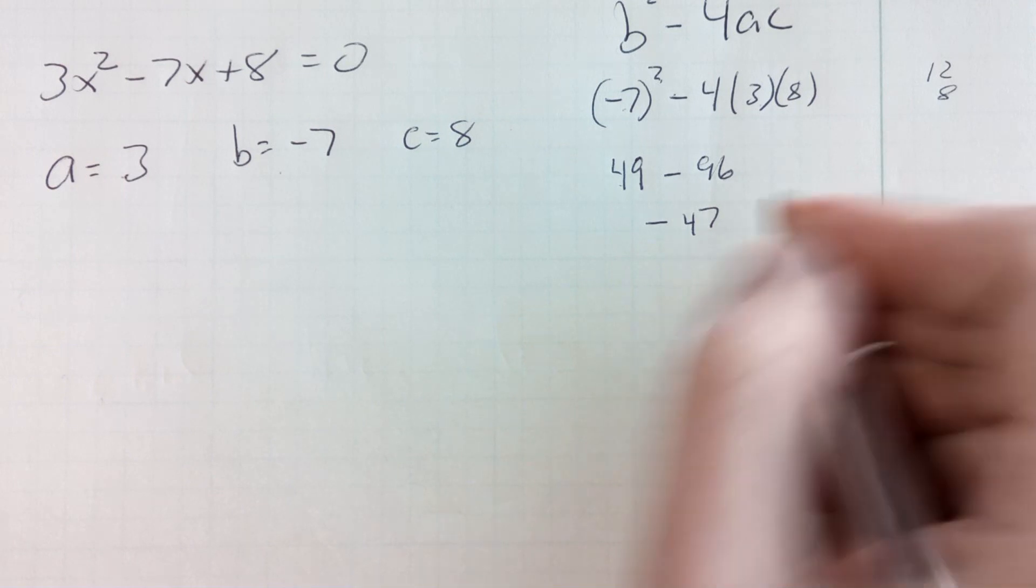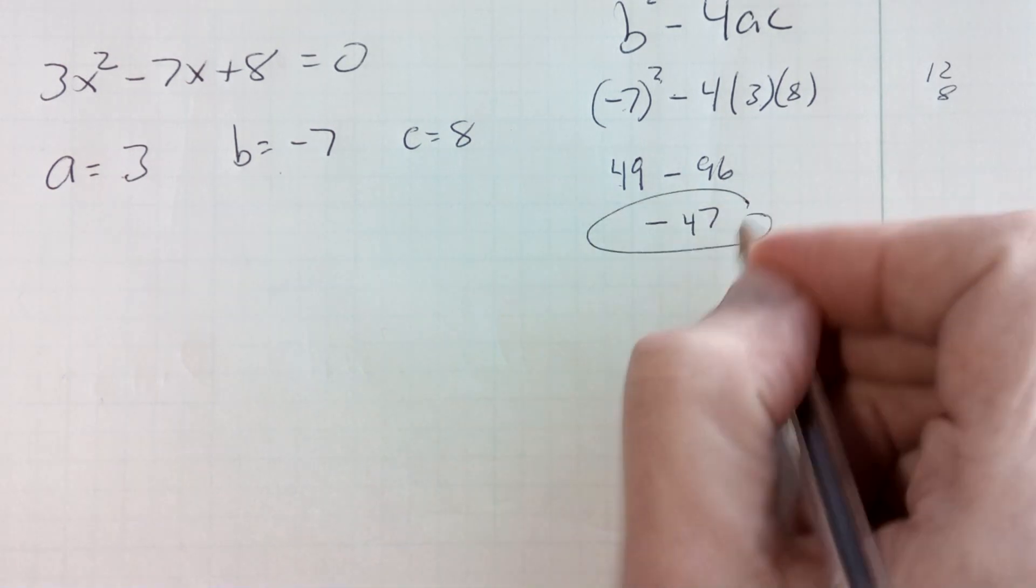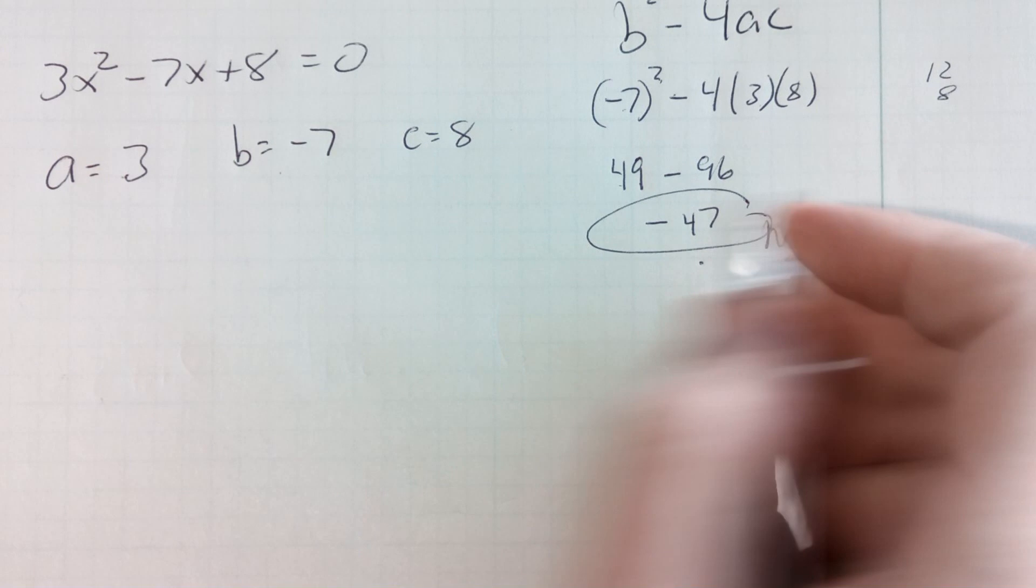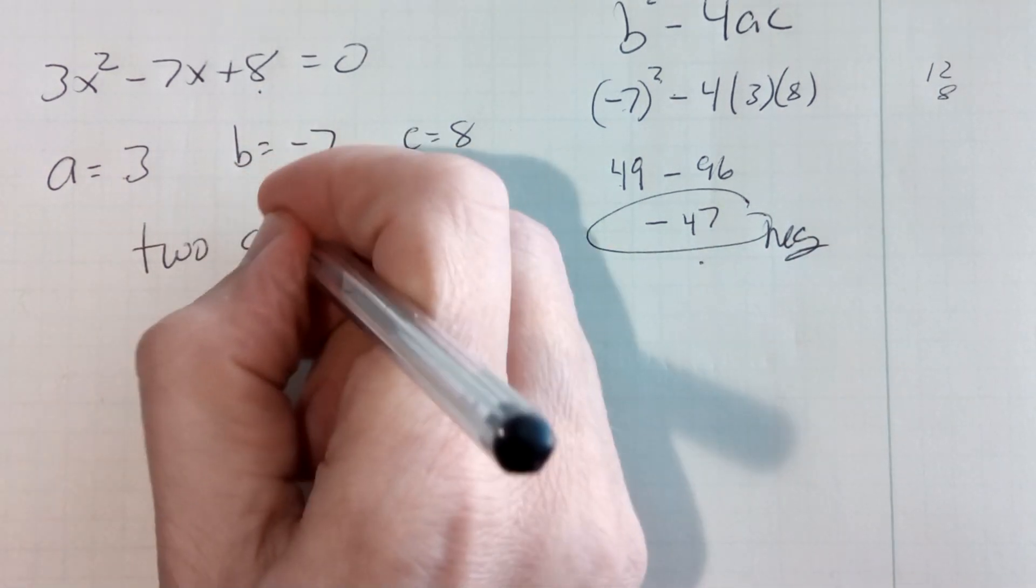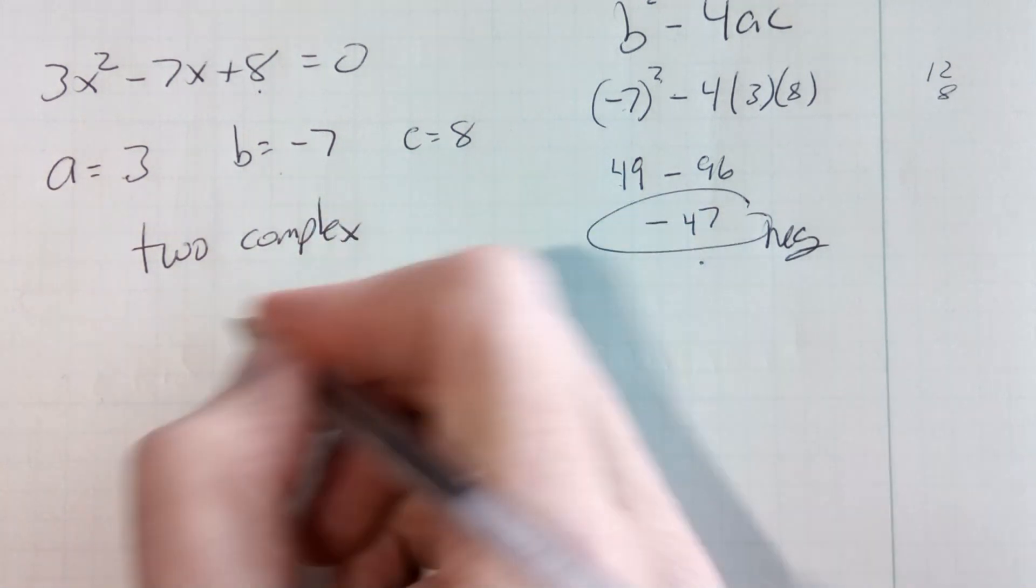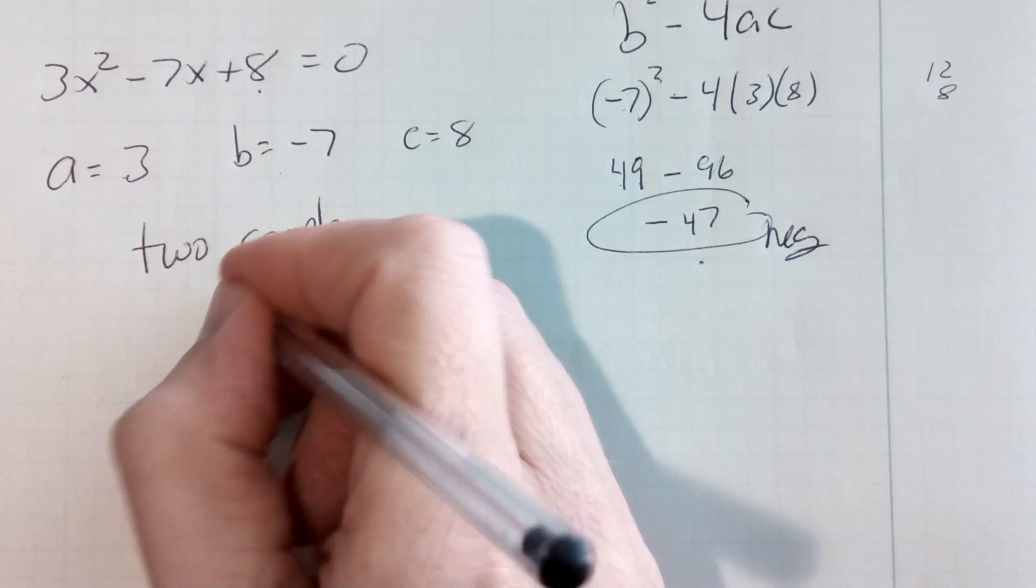Since the discriminant is negative, I have a negative discriminant, this quadratic will have two complex or imaginary or non-real solutions.